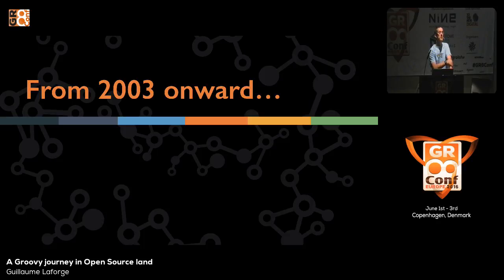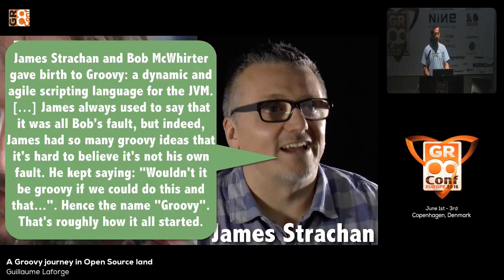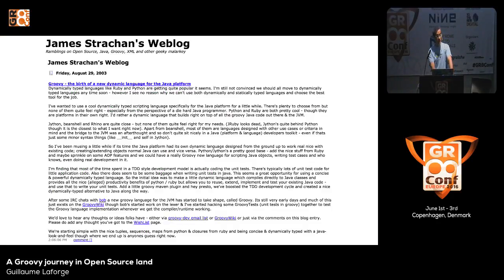Let's do a little bit of history. Groovy started in 2003 — that was when the 24 series launched. Two guys, Jim Strachan and Bob McWhirter, actually started the project. They were playing with Python and were Java developers; they also had some Smalltalk background. They were feeling like they could make Java more groovy somehow, and that's actually really how the name stuck. Groovy will be 13 pretty soon.